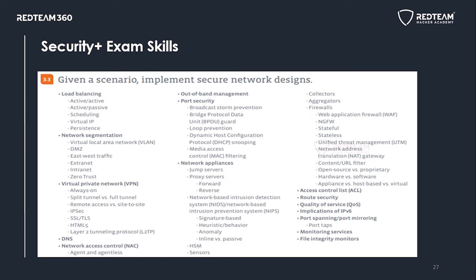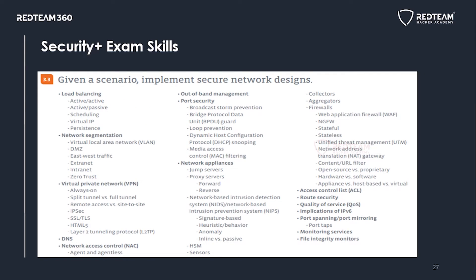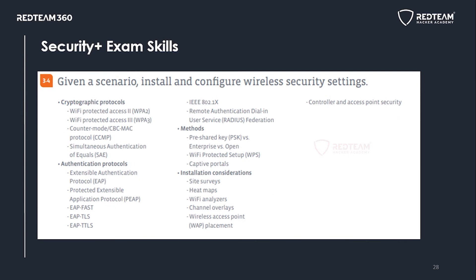We will also discuss network and security appliances such as proxy servers, jump servers, and intrusion detection and prevention systems. Then we look at different types of firewalls, how they differ from one another, and security aspects related to routing, including access control lists (ACLs) used by firewalls to allow and deny traffic.